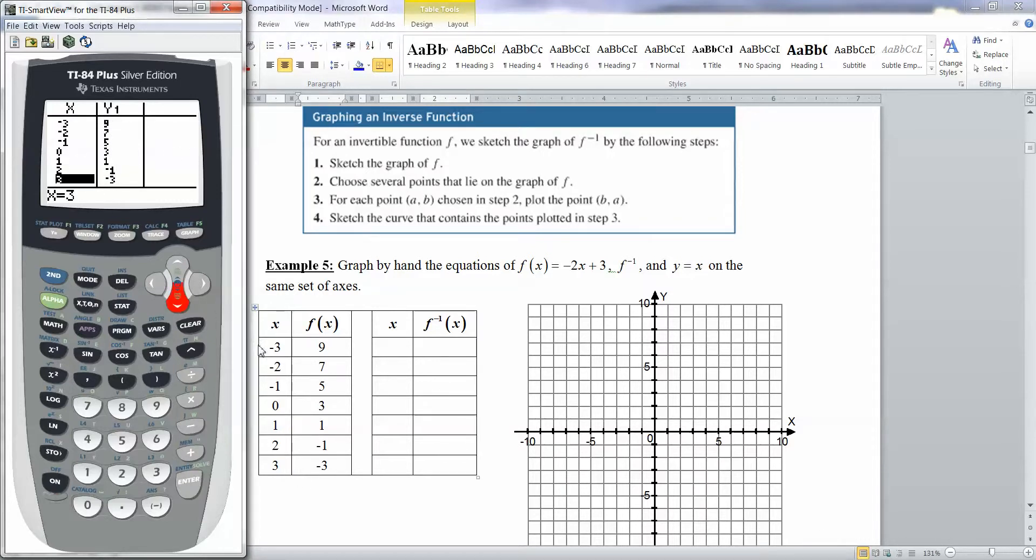So negative 3 went to 9, negative 2 went to 7. Notice you're going down by 2 every time. That's a sign that it's linear, because that slope is what you're dropping by. We learned all of that in chapters 1, 2, and 3. And then your y-intercept was 0, 3, right there.